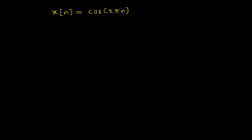Welcome to the video lecture on periodic and aperiodic signals. In this video we will consider an example wherein x[n] equals cos(2π·n).